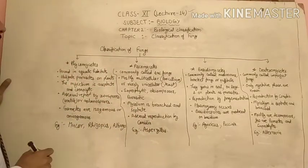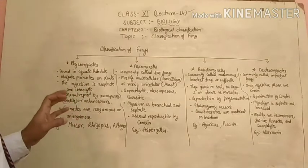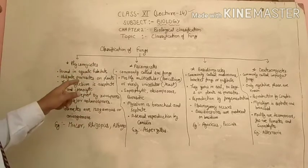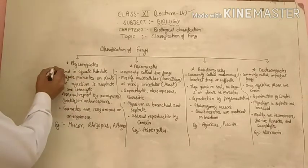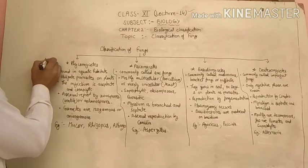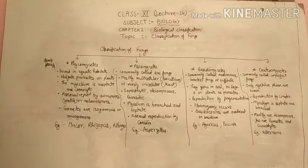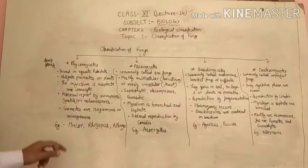Now, Phycomycetes — we will discuss these are found in aquatic habitats. Mostly fungi belonging to Phycomycetes are found in aquatic habitats, meaning they are present in damp or moist conditions.